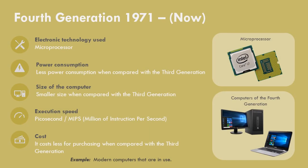4th generation, 1971 to now. Microprocessors are used as electronic technology. They consume less power compared to 3rd generation computers, and the size of the computer is smaller than 3rd generation. Execution speed is measured in MIPS — millions of instructions per second — and picoseconds. It costs less for purchasing compared to 3rd generation. Examples include today's modern computers.